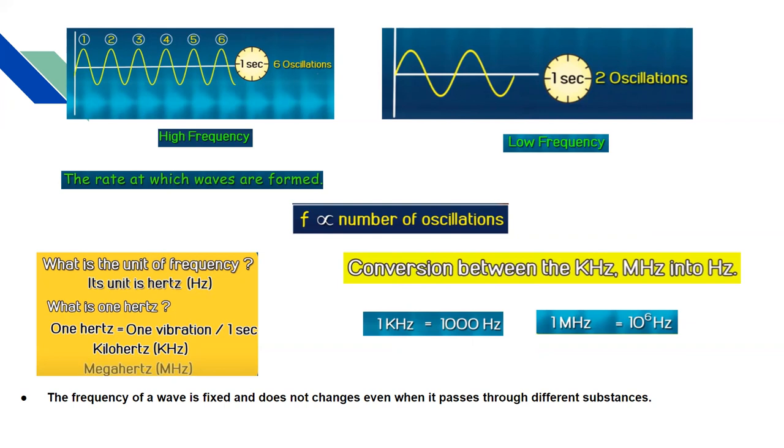If we consider higher units of frequency, it will be kilohertz and megahertz. Now let us study the conversion between kilohertz, megahertz into hertz. One kilohertz equals one thousand hertz, and one megahertz equals ten raised to the power six hertz.